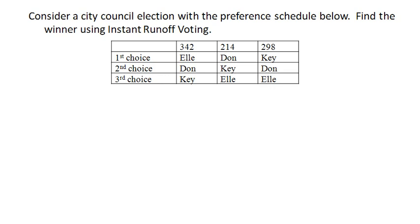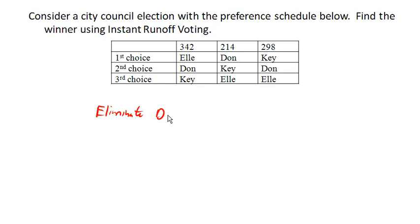Let's look at this city council election where we have two Democratic candidates splitting the Democratic vote, and this time let's use instant runoff voting. Looking at our first-choice candidates here, the one with the least number of first-choice votes is Don, and so Don will be the first to be eliminated.